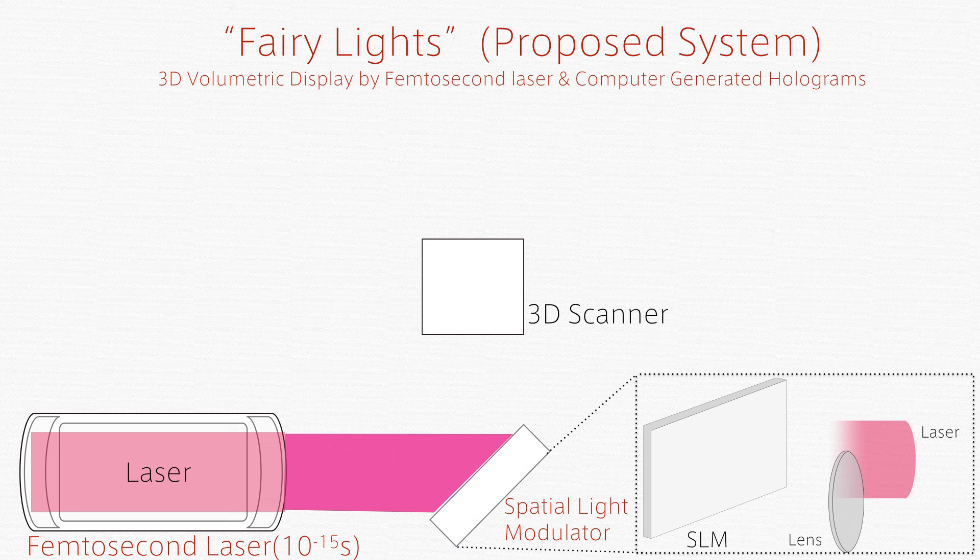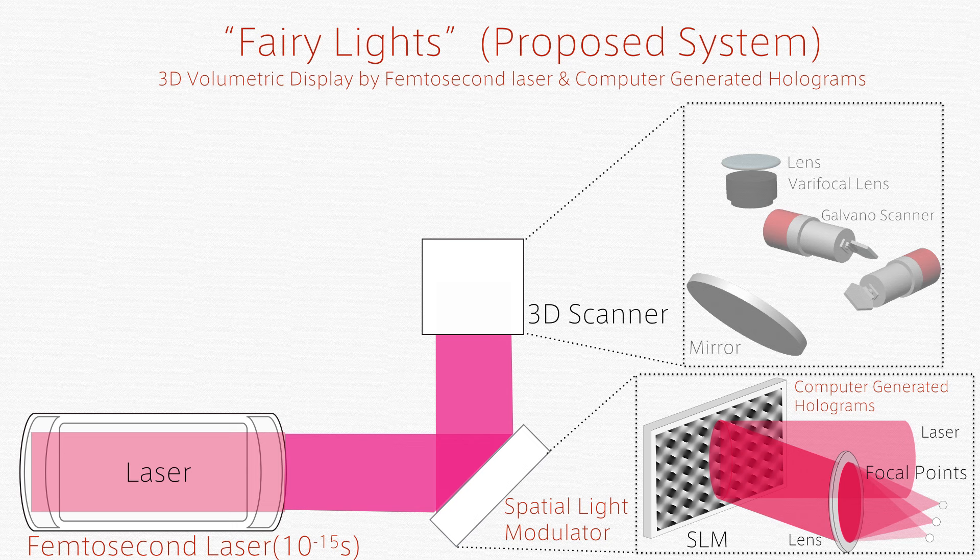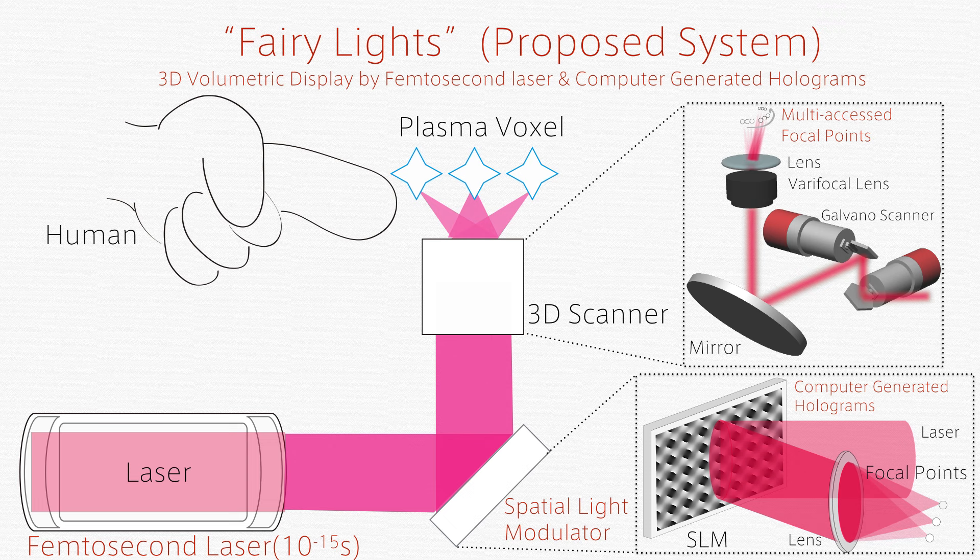We use an optical device called the spatial light modulator to modify the phases of light rays and produce various spatial distributions of light based on interference. Our results lead to calmer and safer plasma generation that can be incorporated into our daily lives.